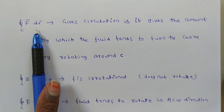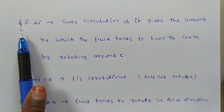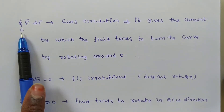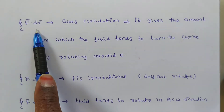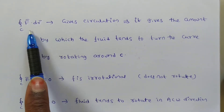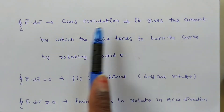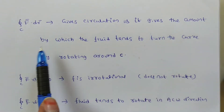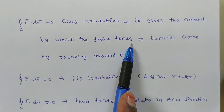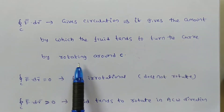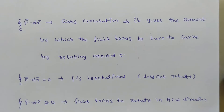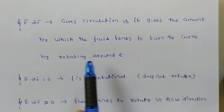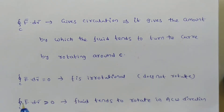Consider the integral over C of f̄ · dr̄ where C is a closed curve. A closed curve may be a circle, hyperbola, square, or rectangle. In this case, the integral represents the amount by which the fluid tends to turn the curve by rotating around C.